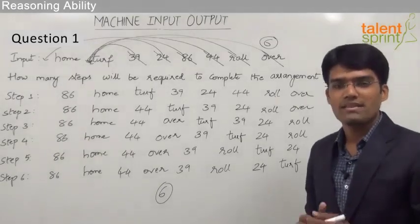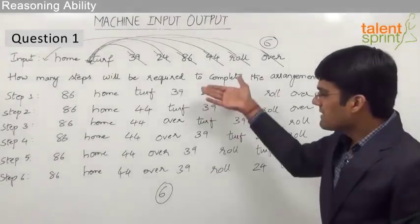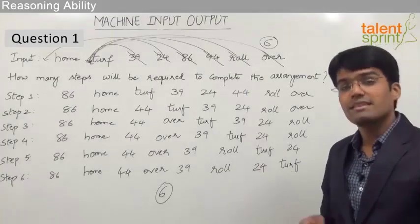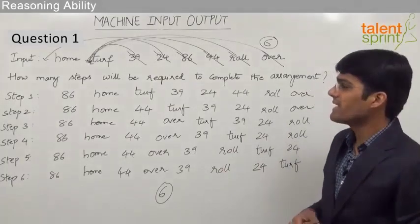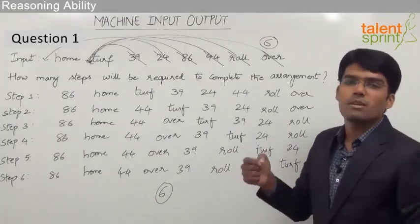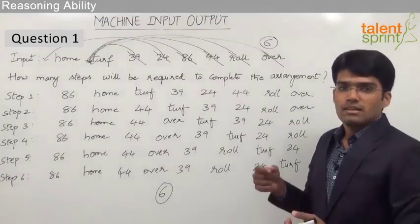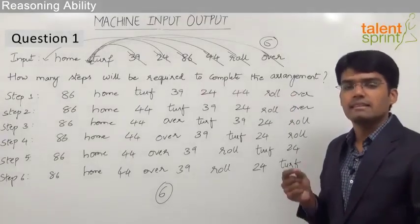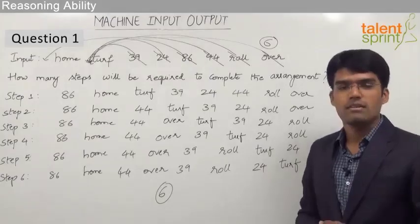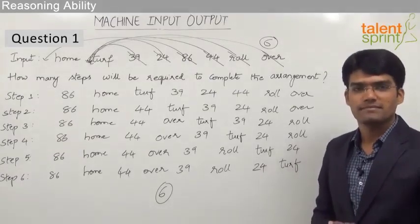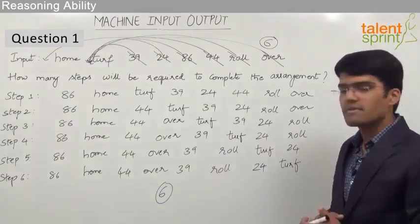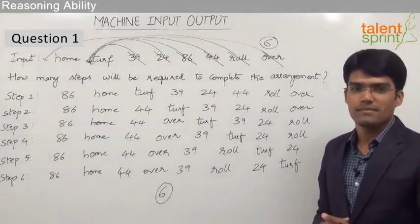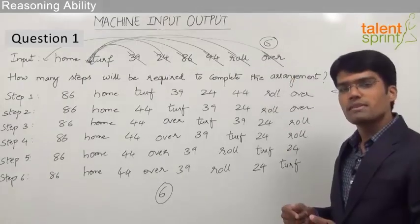Always try to be smart and get the answers in a simple way rather than following the complete step-by-step procedure. For some questions, you may be asked which step will be the last but one step. To solve such questions, find out the total number of steps — which is 6 in this case — and then the last but one step would be step 5. There are two types of questions: how many steps will be required to complete the rearrangement, or which step will be the last but one step. Always find out the total number of steps to get the answer.